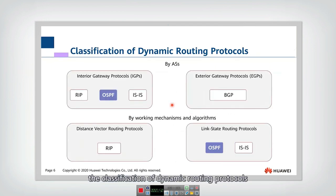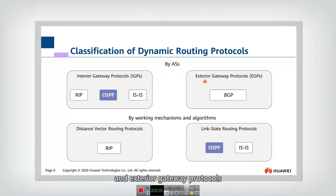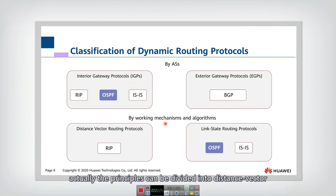We also talked about the classification of dynamic routing protocols. By whether those routing protocols run within one autonomous system, they can be divided into Interior Gateway Protocols and Exterior Gateway Protocols. If the routing protocols run within one autonomous system, they are IGPs. OSPF belongs to the IGP category. According to the working mechanism, protocols can be divided into distance vector and link state. OSPF belongs to link state routing protocols.